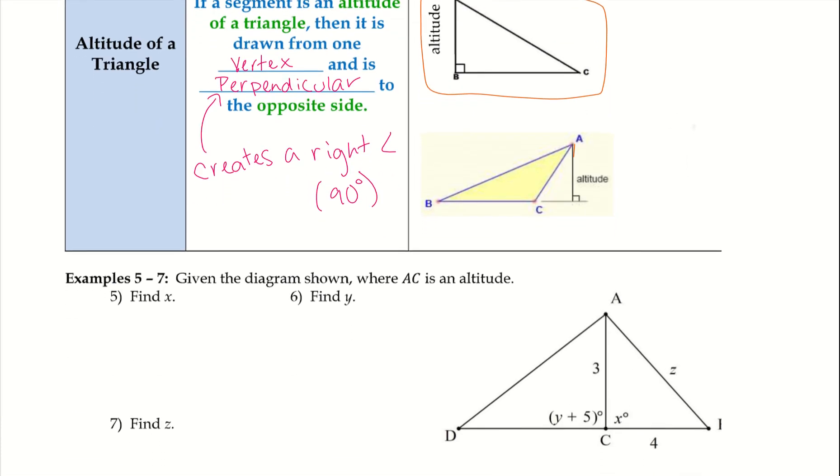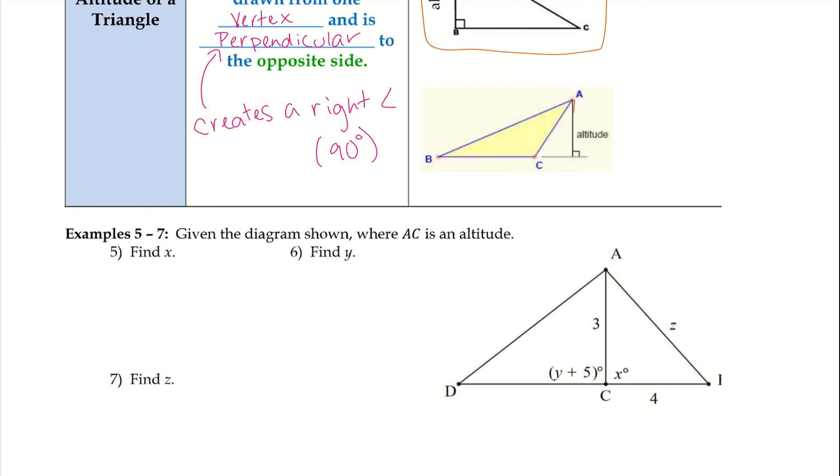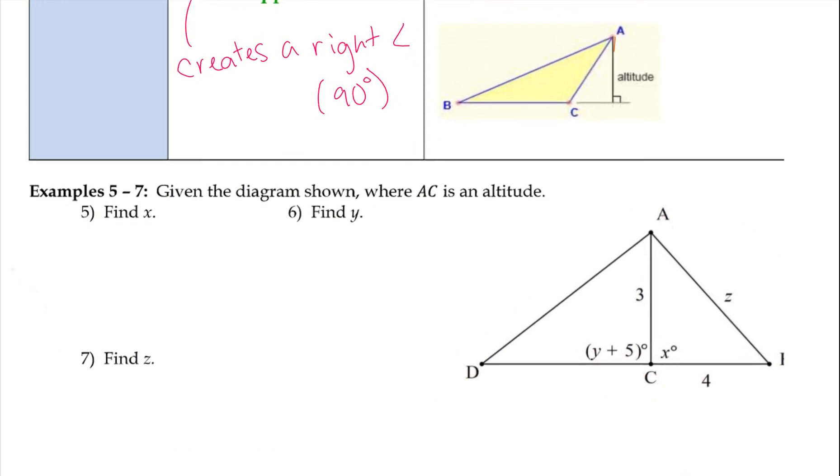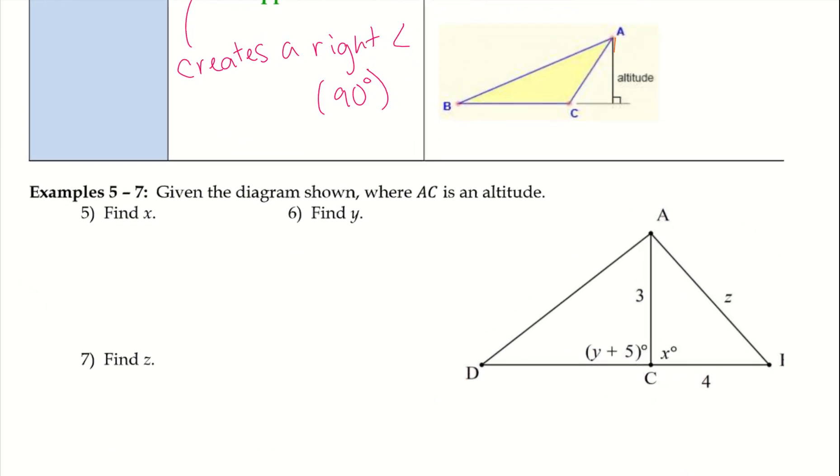Let's try a couple examples. Examples 5 through 7, given the diagram shown where AC is an altitude. If AC is an altitude, we know that these two angles here are 90 degrees because it's perpendicular. So if I want to find x, I'm going to set x equal to 90. There's nothing to solve, so there's our answer. For y, however, this one is also 90 degrees but we are going to have to set the whole thing equal to 90. So y plus 5 is equal to 90, so I can subtract 5 to get y equals 85.